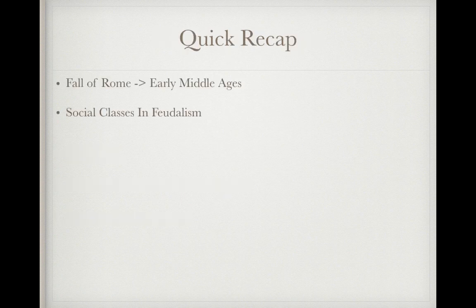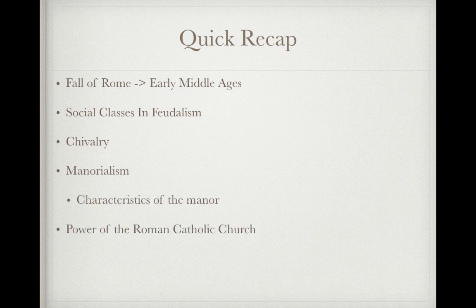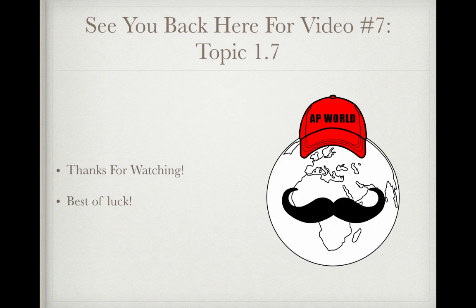Quick recap: the fall of Rome marks the early Middle Ages; know social classes and feudalism; chivalry is similar to Japan's code of Bushido; understand manorialism and the characteristics of the manor; know the power of the Roman Catholic Church; the Estates General in France; and the Magna Carta in England. See you in video seven, topic 1.7 — the last video in period one. Good luck on all your exams!